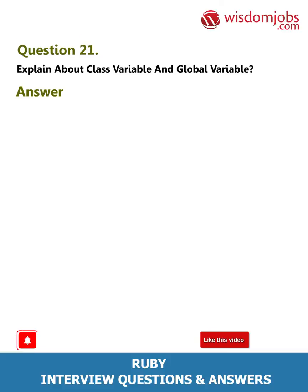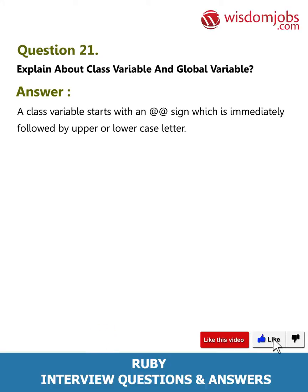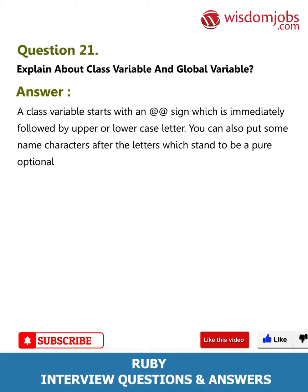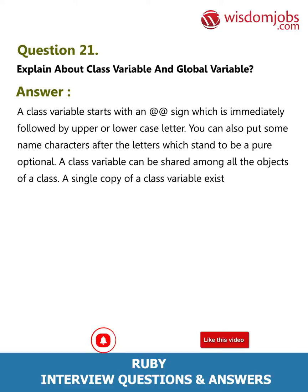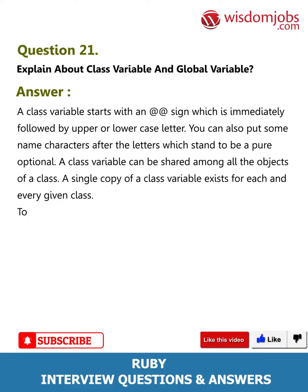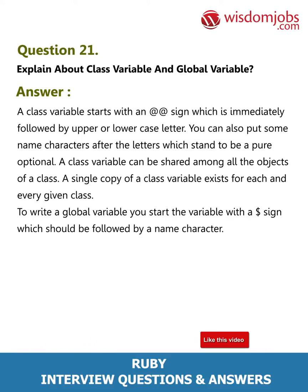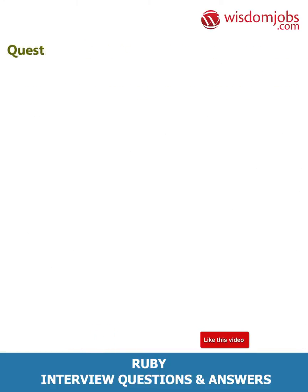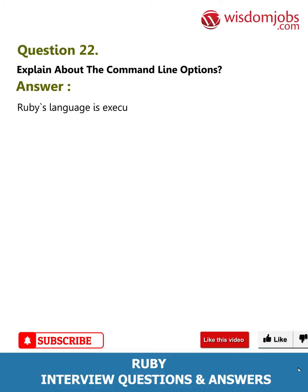Question 21: Explain about class variables and global variables. Answer: A class variable starts with an at sign (@@) immediately followed by an upper or lowercase letter, with optional name characters after. A class variable can be shared among all the objects of a class; a single copy exists for each given class. For a global variable, you start with a dollar sign ($) followed by a name character. Ruby defines a number of global variables which include punctuation characters such as $_ and $k.